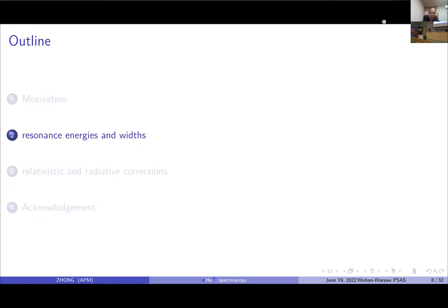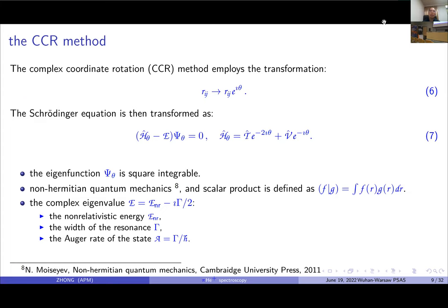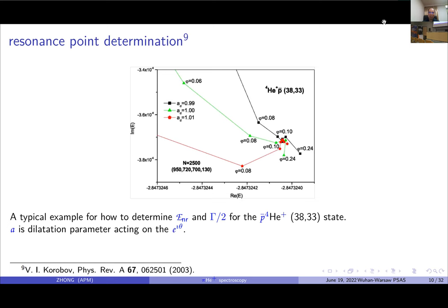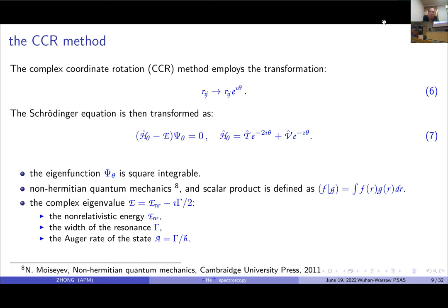Since the metastable states of pionic helium is a resonant state, we should calculate resonant energies and widths. The complex coordinate rotation method is widely used to calculate resonant states in atomic and molecular physics. Under this transformation, the Hamiltonian of the Schrödinger equation is transformed as follows, and therefore the wave function of the resonant state is then square integrable and can be calculated in a similar way as bound states.